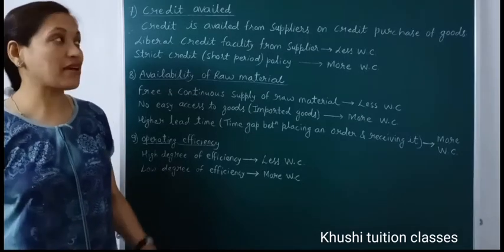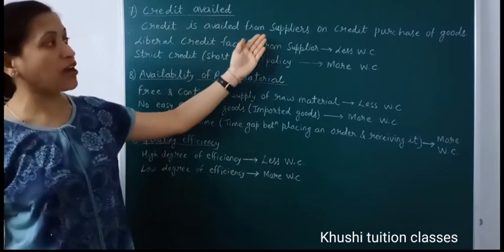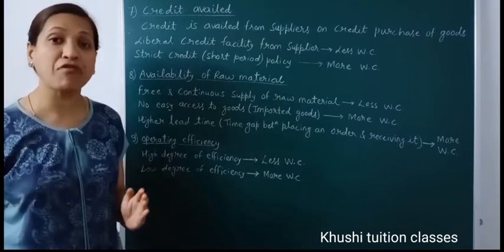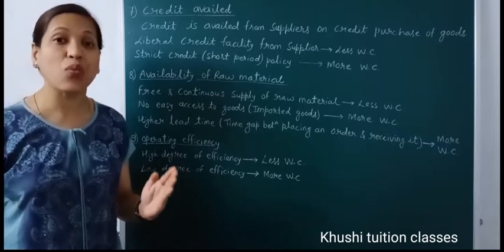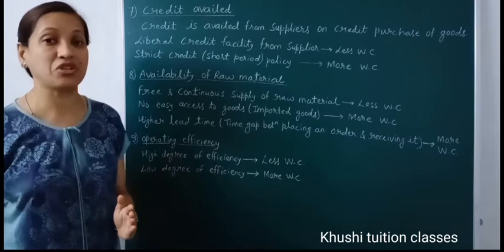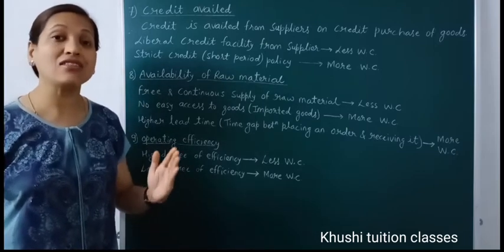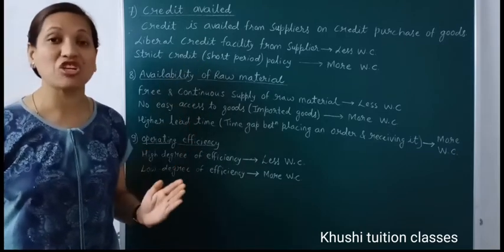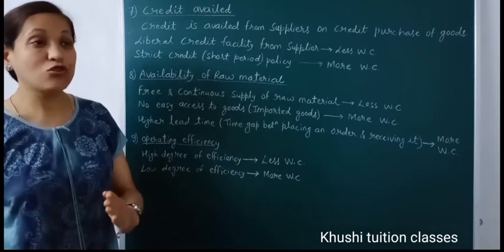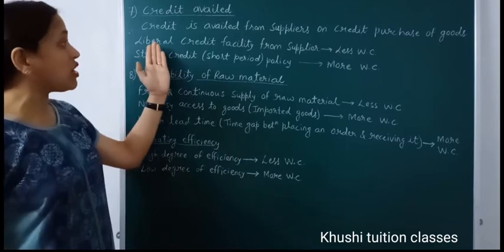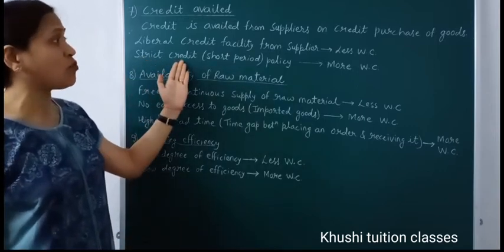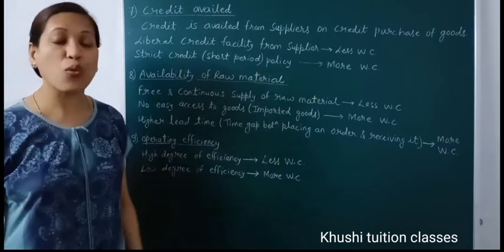The seventh factor is credit available from suppliers on credit purchases of goods. If suppliers provide a liberal credit facility — allowing us to purchase raw material or finished goods on credit — then current liabilities help finance current assets, meaning we need less working capital. But if suppliers follow a strict credit policy with a short period of credit terms, then we need more working capital.